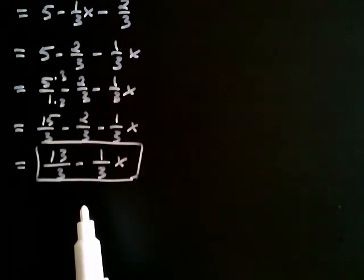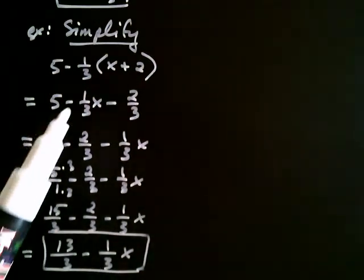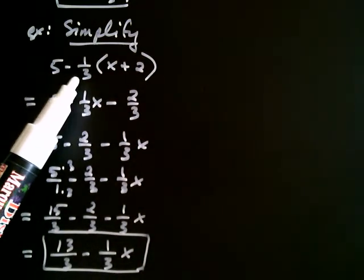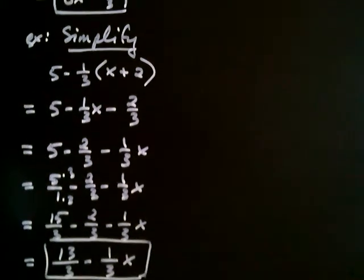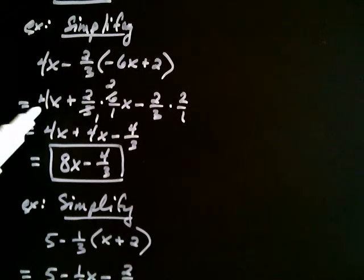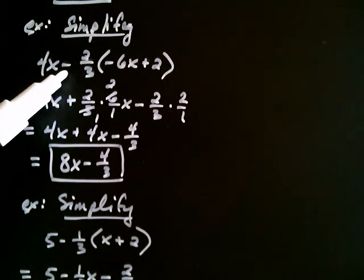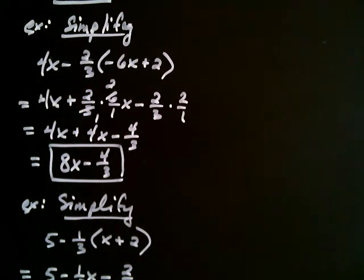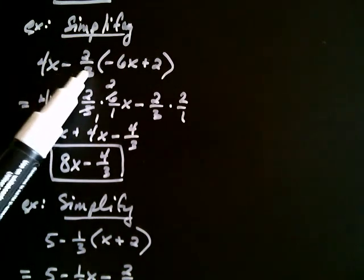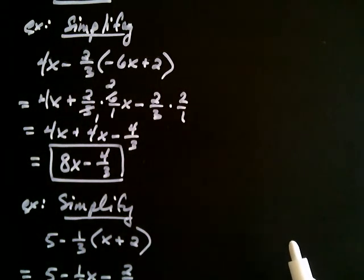What we saw in this video is that it's very helpful to think of a negative as belonging with what you're going to distribute. Even in the previous example, it looks fairly complicated, but it's not so bad if you imagine the negative as belonging to what follows and distributing the entire negative 2 thirds. We'll be using this when we solve equations. Stay tuned.